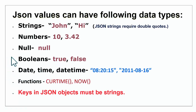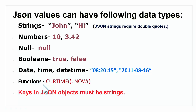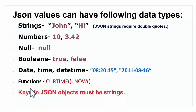Date, time, and datetime can also be used as JSON values. Functions like CURTIME, which tells the current time, and NOW, which tells the current time and date, can also be used as JSON values. Keys in JSON objects must be strings. So values can have these many data types, but keys should be strings.